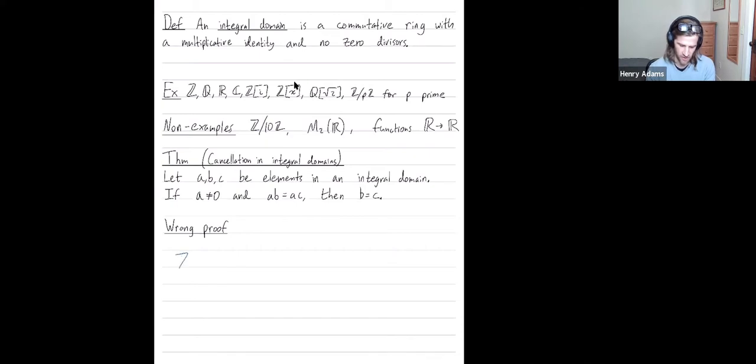So Z mod 12Z is a ring, and the cancellation property would be that if ab equals ac, then b equals c.